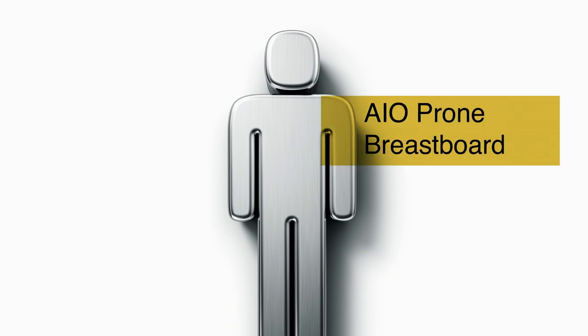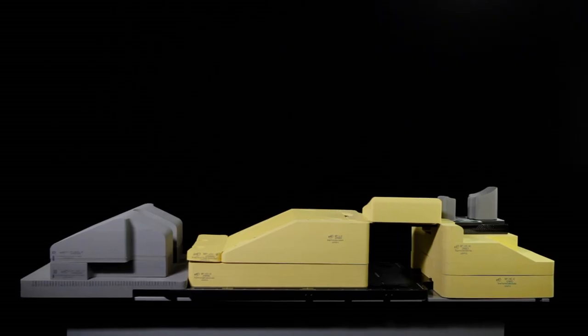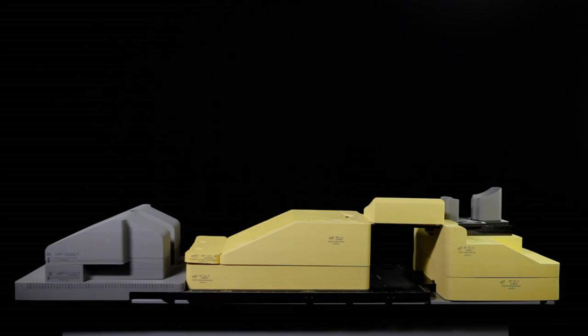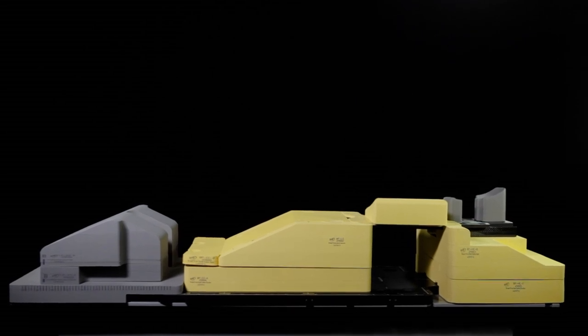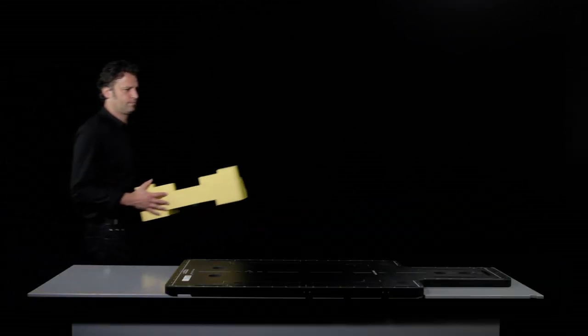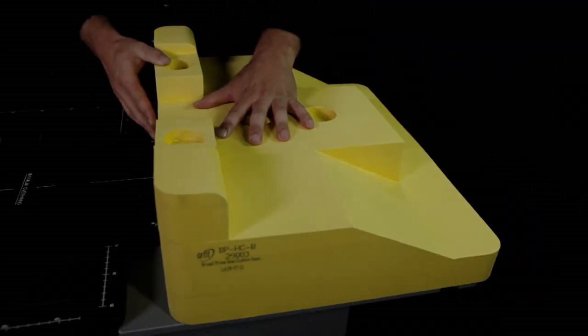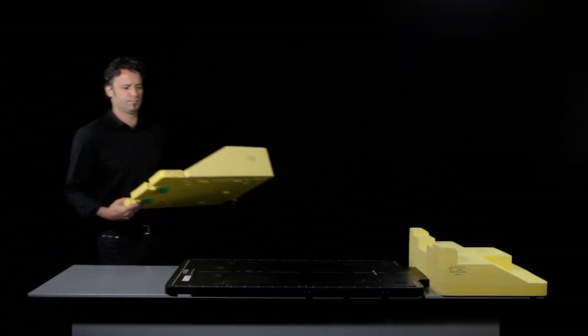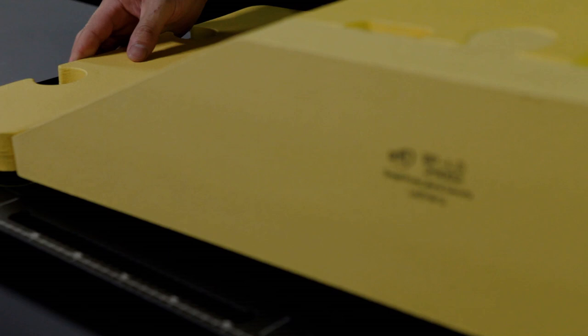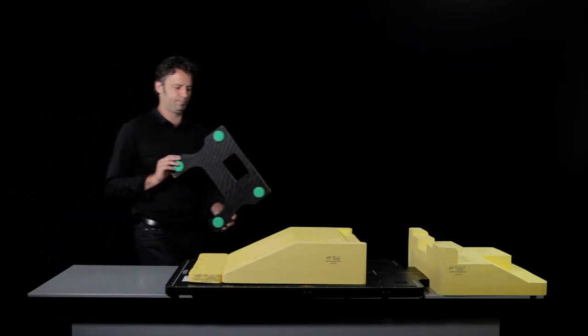AIO prone breast board. The prone breast set is based on a caudal and cranial cushion with a gap in the middle. First put the cranial cushion in place by locating the bosses underneath the cushion in the base plate. Push them well in. Then put the caudal cushion in place. The yellow lines on the base plate will help you find the right place for these cushions.